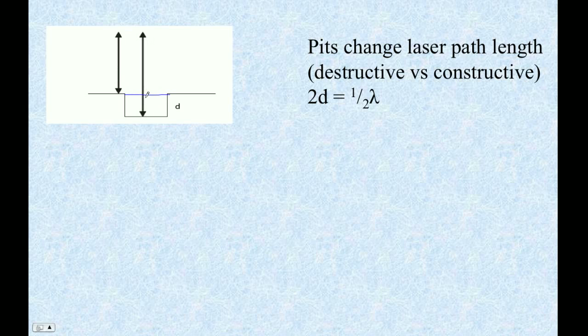it actually goes, whatever this depth is, it actually goes down and then back, whatever that depth is. And if twice that depth is half a wavelength of light, then it goes from constructive interference to destructive interference. So that's the key thing, basically. The laser is just, when it reads that thing, it actually goes dark because it destructively interferes with itself when it comes back.